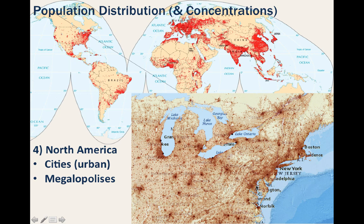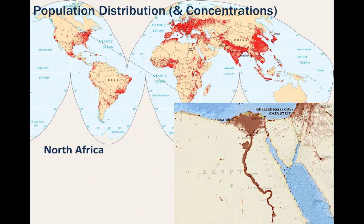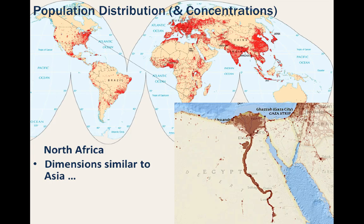A final region we noted previously is Egypt, and looking at the extreme population density, you can see the dimensions of the population are similar to China in that they are concentrated along the Nile River. But seeing as Egypt's total population is just over 80 million, the size of the concentration is nowhere near China's 1.3 billion.